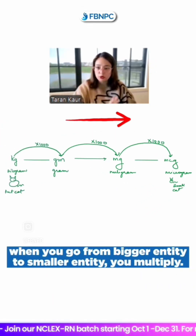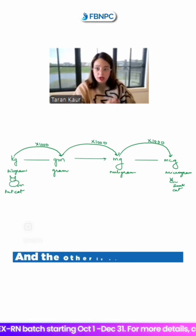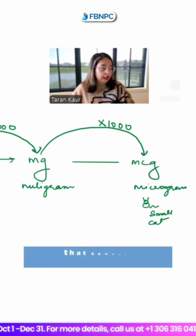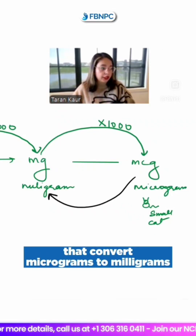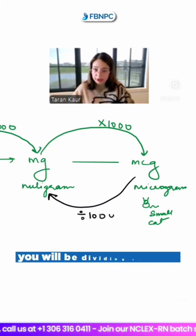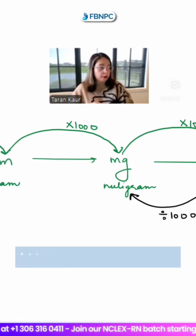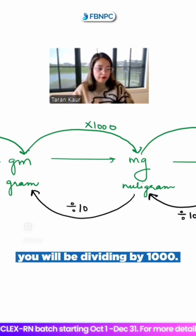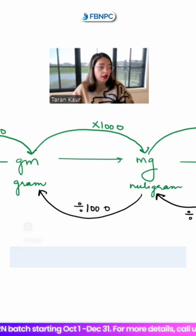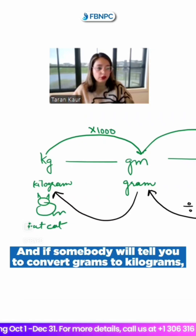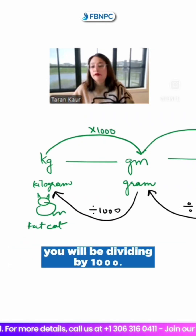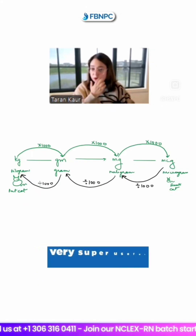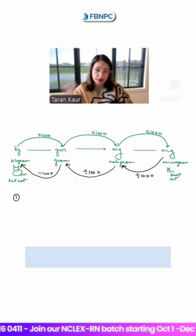The moral of the story is: when you go from a bigger entity to a smaller entity, you multiply, and the opposite is also true. If somebody tells you to convert micrograms to milligrams, you divide by a thousand. If somebody tells you to convert milligrams to grams, you divide by a thousand. And if somebody tells you to convert grams to kilograms, you divide by a thousand. This chart is going to be very handy and super useful for you guys.